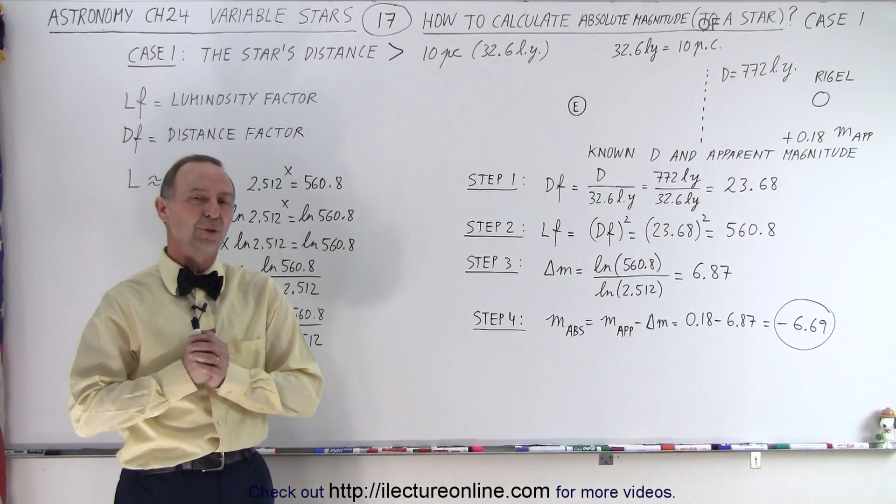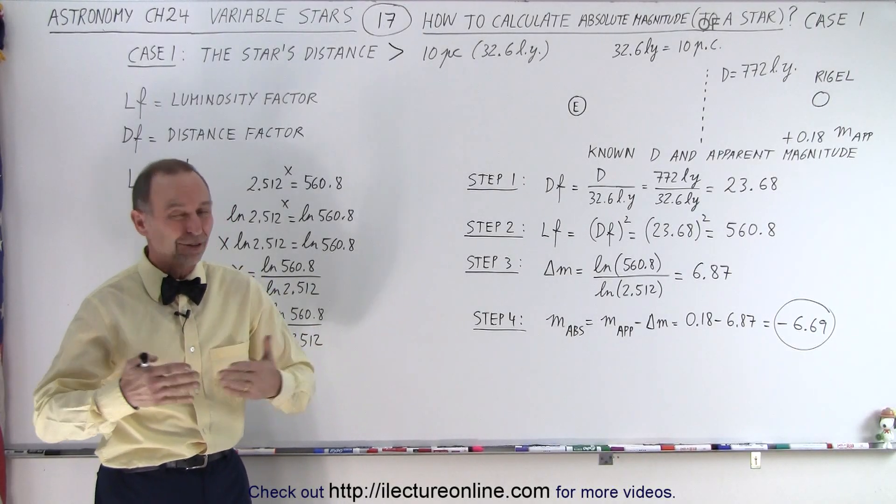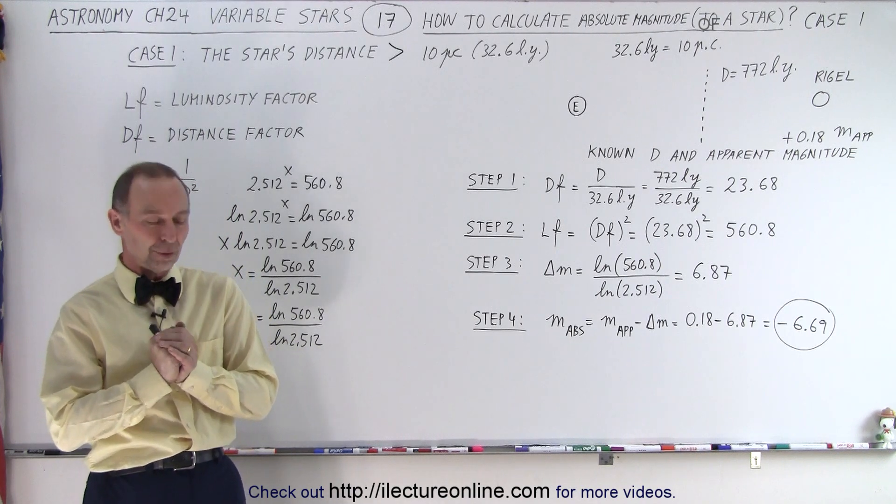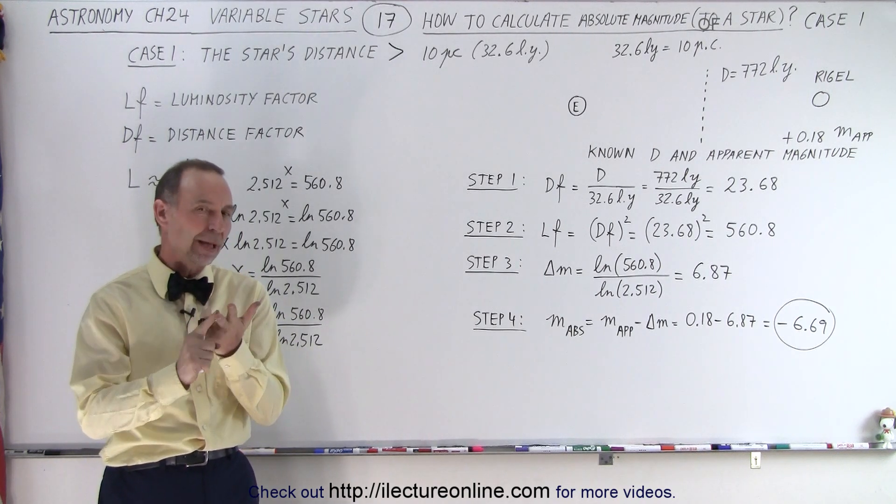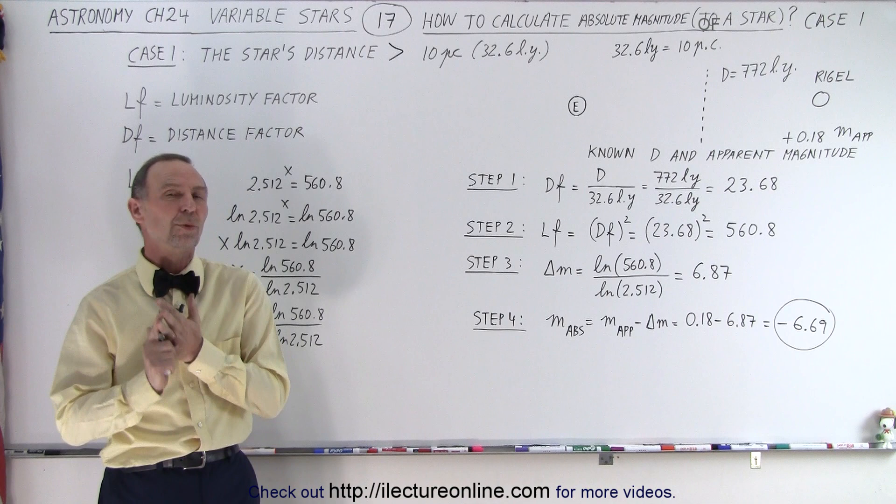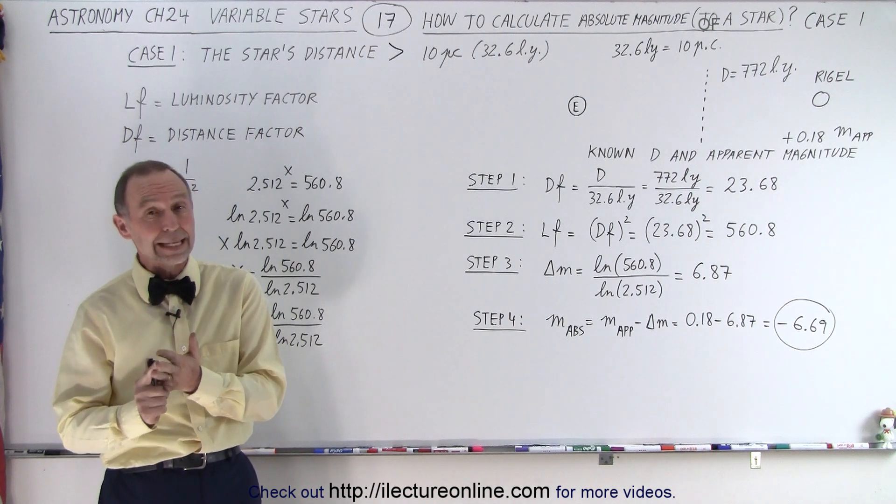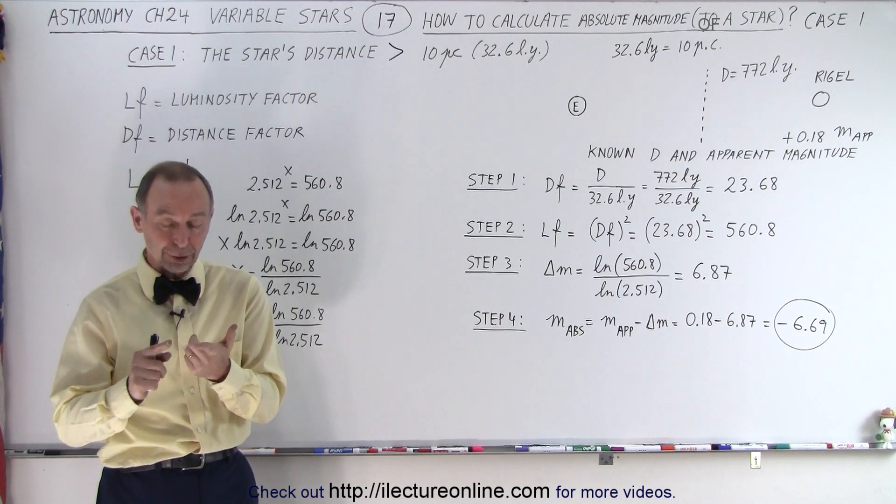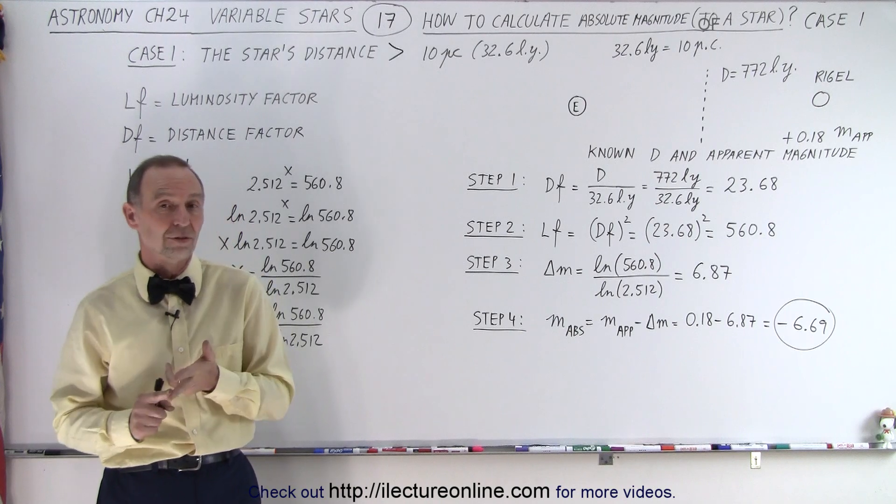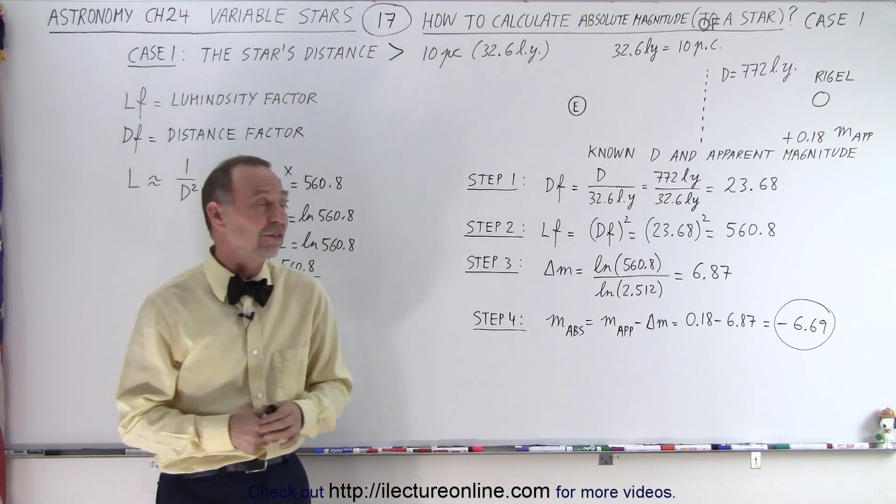Welcome to our lecture online. To hold to the triad that we talked about before, where we had distance, absolute magnitude, and apparent magnitude, we should be able to calculate the absolute magnitude if we know the apparent magnitude and the distance. And so we're going to do two cases.